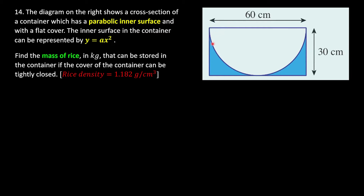The diagram on the right shows a cross section of a container which has a parabolic inner surface. This parabolic inner surface can be represented by the equation y = ax². The problem asks us to find the mass of the rice that can be stored in the container if there is no gap between the cover and the container.